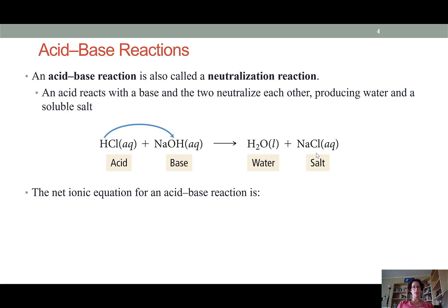Because acid-base reactions result in the production of a molecular species, liquid water in this case, they do have net ionic equations. So the net ionic equation for any acid-base reaction is the hydrogen ion plus the hydroxide anion form liquid water.